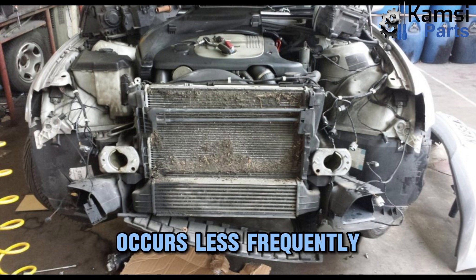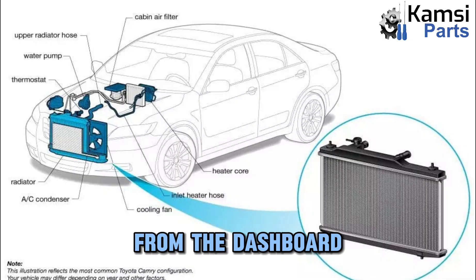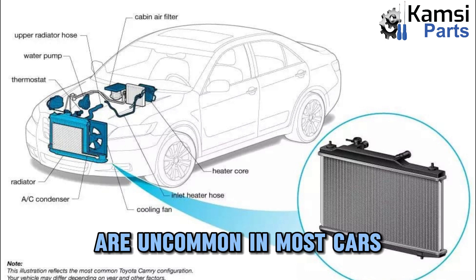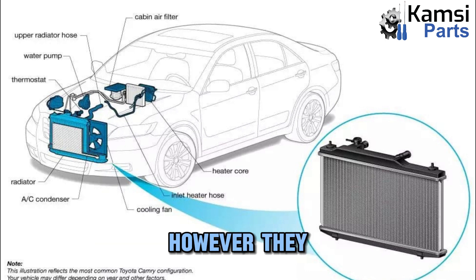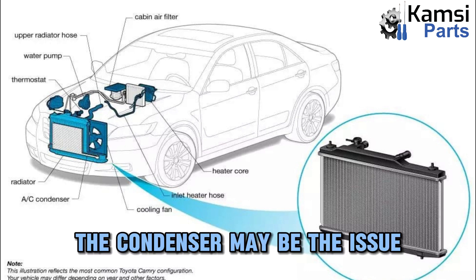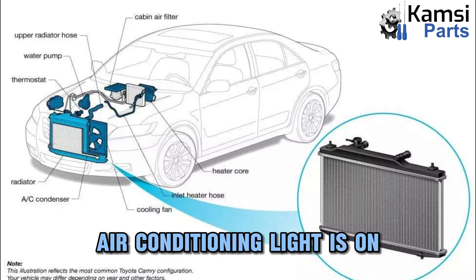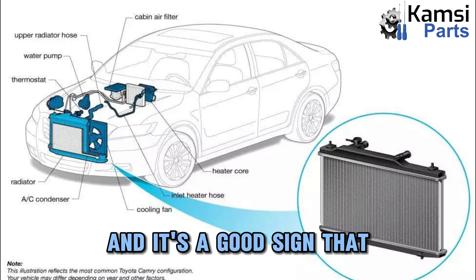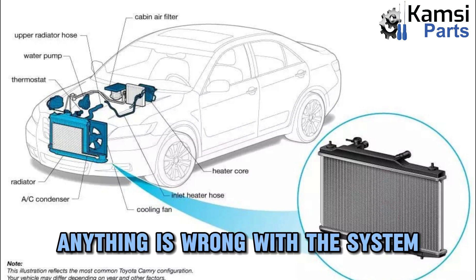5. Warning lights from the dashboard. Dashboard warning lights for AC issues are uncommon in most cars; however, they are present in certain newer models. The condenser may be the issue if your car's air conditioning light is on, and it's a good sign that something is wrong with the system.